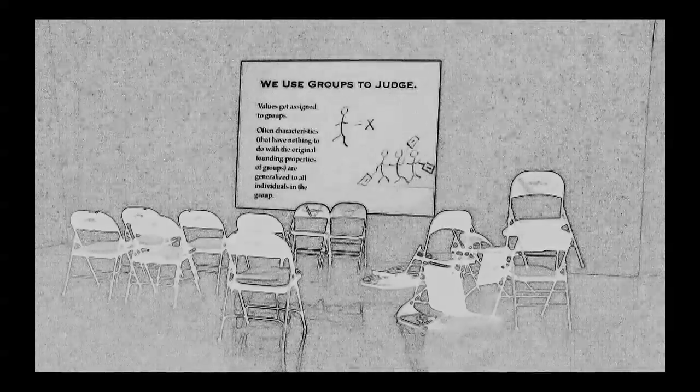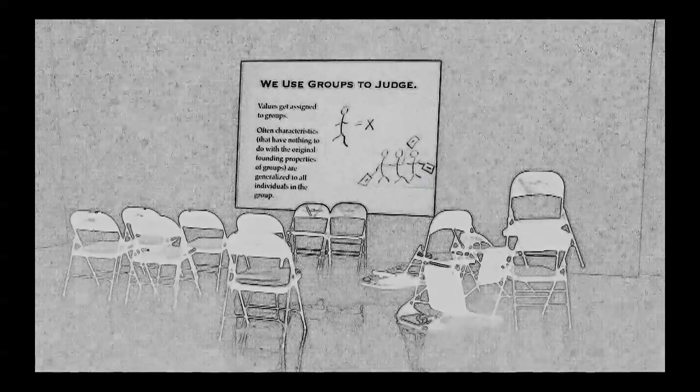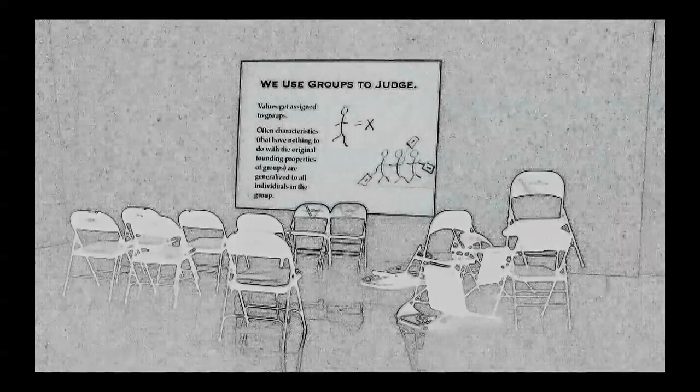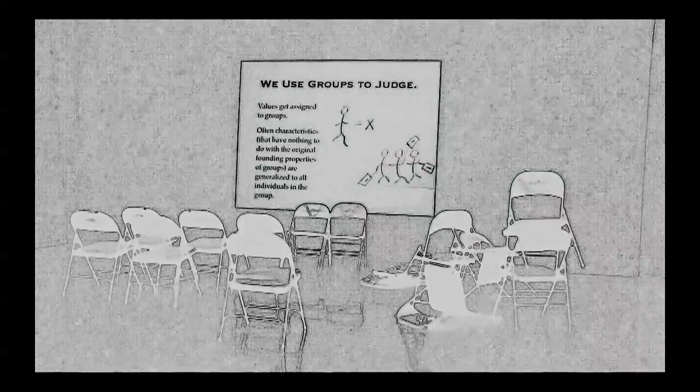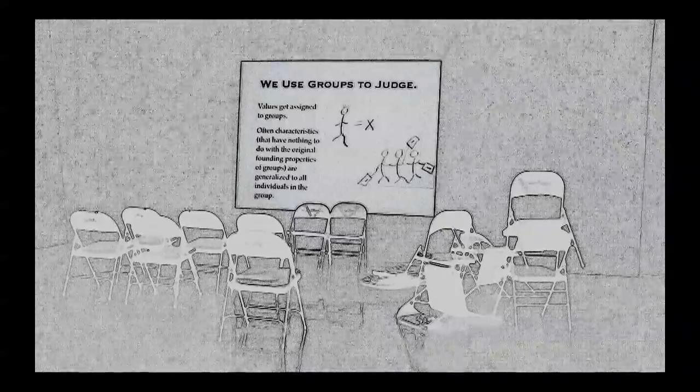This all results in issues of who belongs and who is excluded. Membership in groups can be self-assigned or imposed, made or policed. Groups are used to assert or assign privileges and powers. We use groups to judge. Values are assigned to groups. Often characteristics that have nothing to do with the original founding properties of groups are generalized to all individuals in the group.